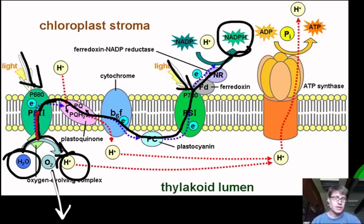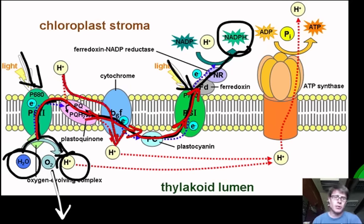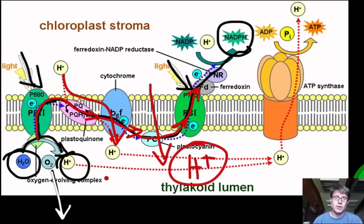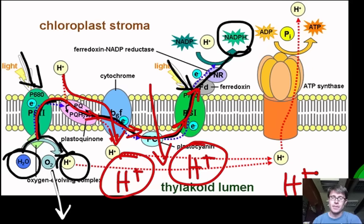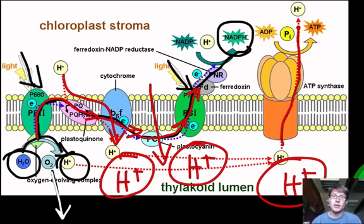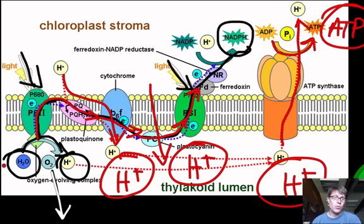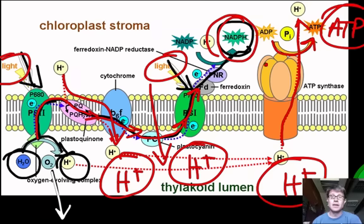Electrons flow through an electron transport chain in the thylakoid. As they pass through these proteins, they use their energy to pump protons to the inside of the thylakoid membrane, making it very positive on the inside. The protons can only escape through ATP synthase, another protein, and it uses the energy of those flowing protons to make ATP. So to recap: light comes in, water breaks down into oxygen releasing electrons, and we end up with NADPH — where electrons end up — and ATP. We've stored the energy of light in ATP and NADPH.